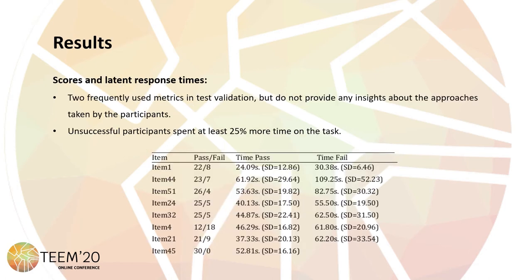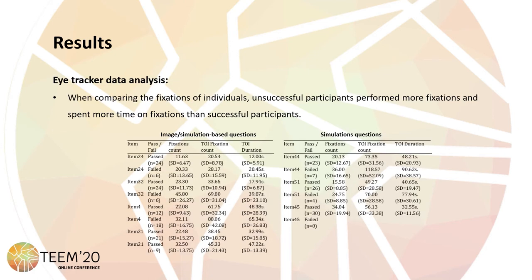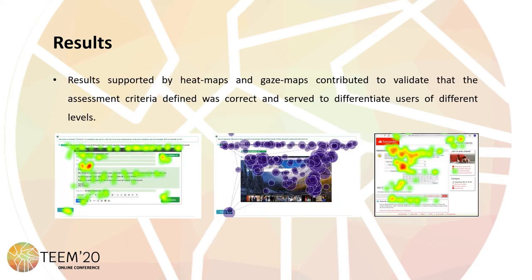Results. We started by analyzing the scores and response times, and found that unsuccessful participants spent at least 25% more time on the task. From the eye-tracker data analysis, we found that unsuccessful participants performed more fixations and spent more time on fixations than successful participants. Results supported by heat maps and gaze maps contributed to validate that the assessment criteria defined was correct and served to differentiate users of different levels.